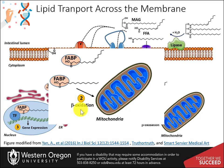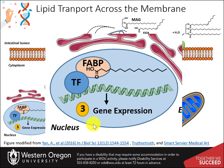Second, free fatty acids can travel to the mitochondria where they can be broken down in the process of beta-oxidation to acetyl-CoA. This energy can then be used in the Krebs cycle and electron transport chain to produce ATP. Fatty acid binding protein-free fatty acid complexes can also bind with transcription factors and mediate gene expression. These transcription factors increase the expression of genes involved in the oxidation and metabolism of lipids.